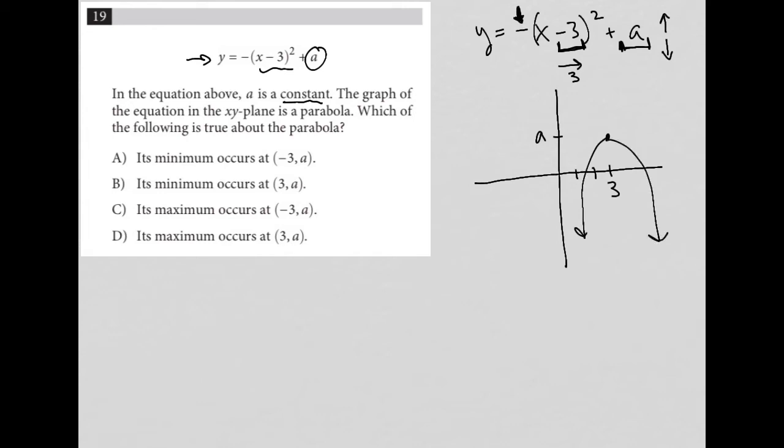So now what else do we have in this question? The second part of this question says, which of the following is true about the parabola? And we can see that answer choices A and B mention a minimum, while answer choices C and D mention a maximum.